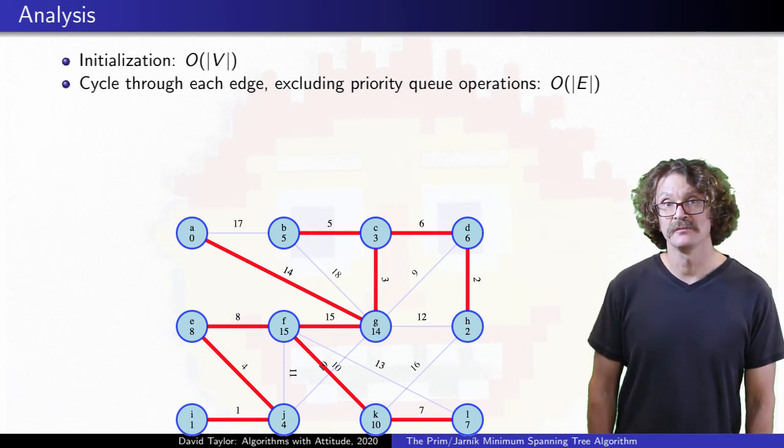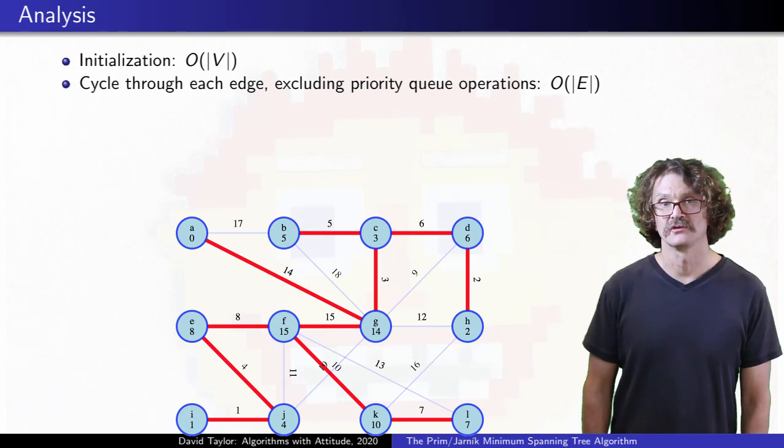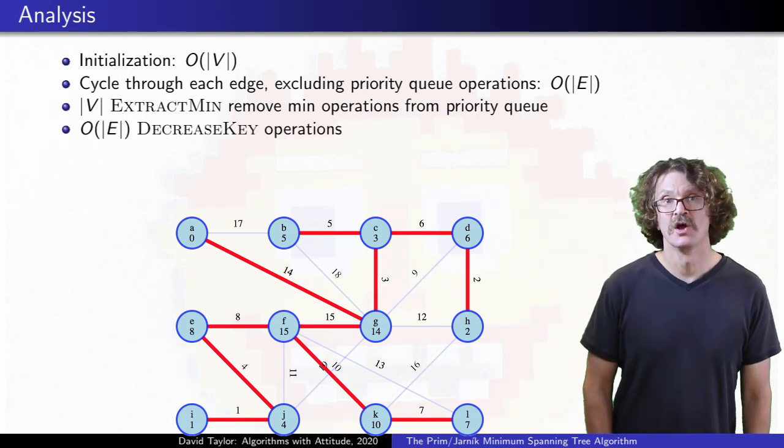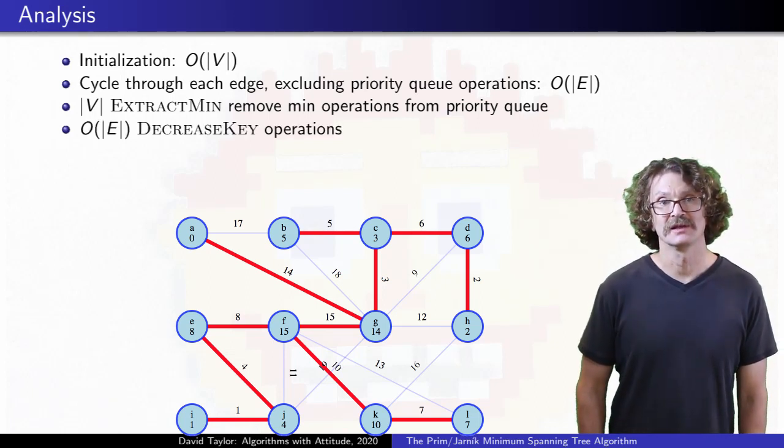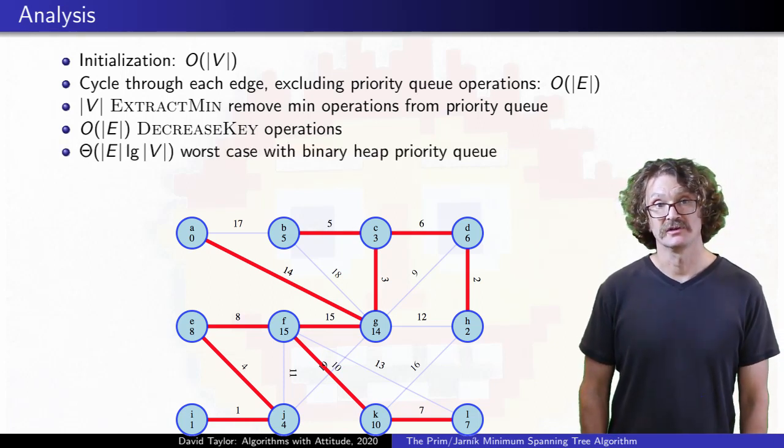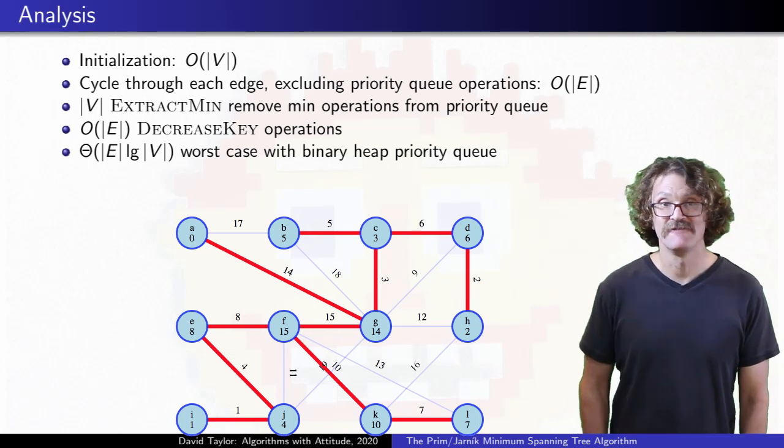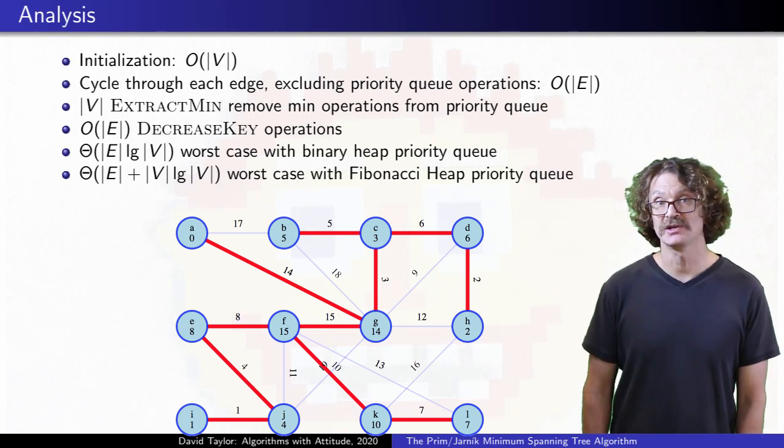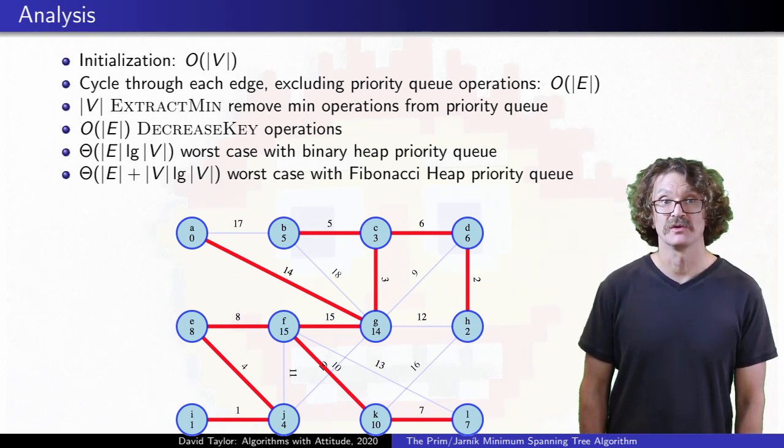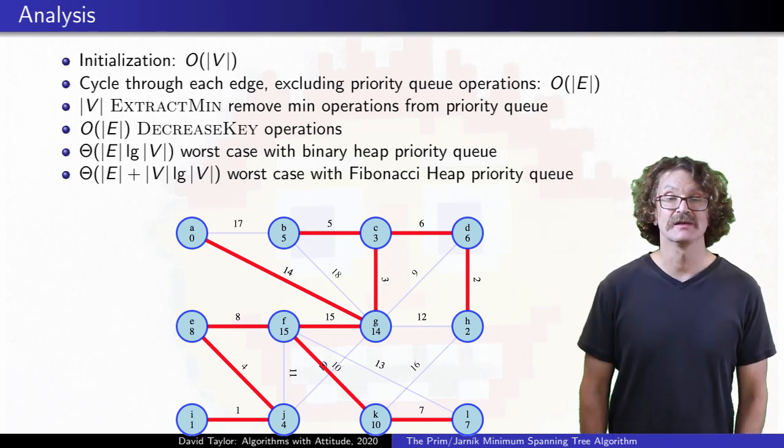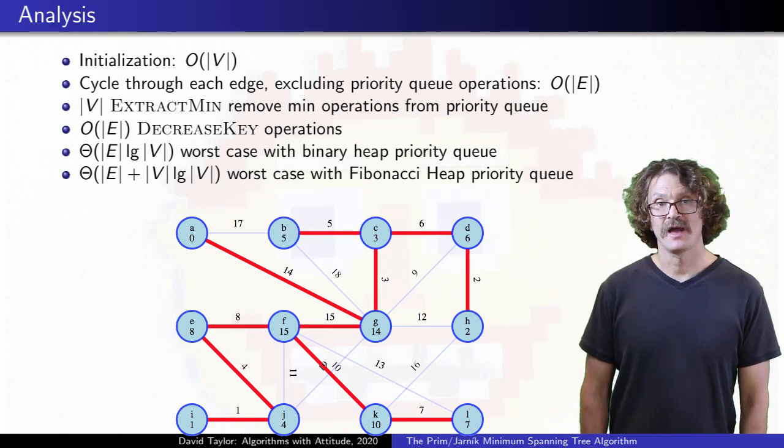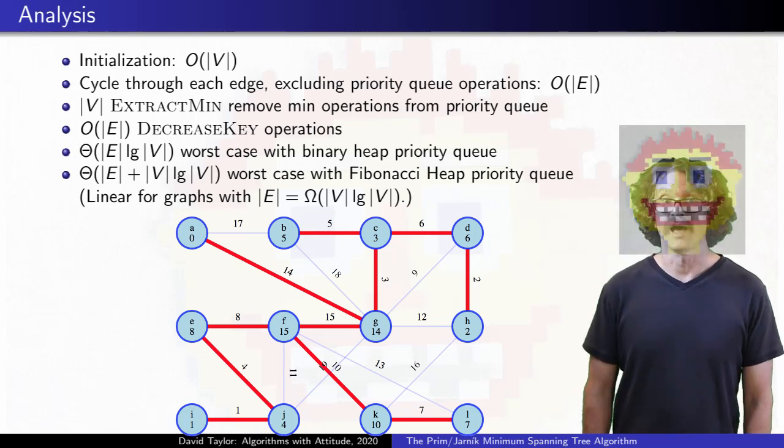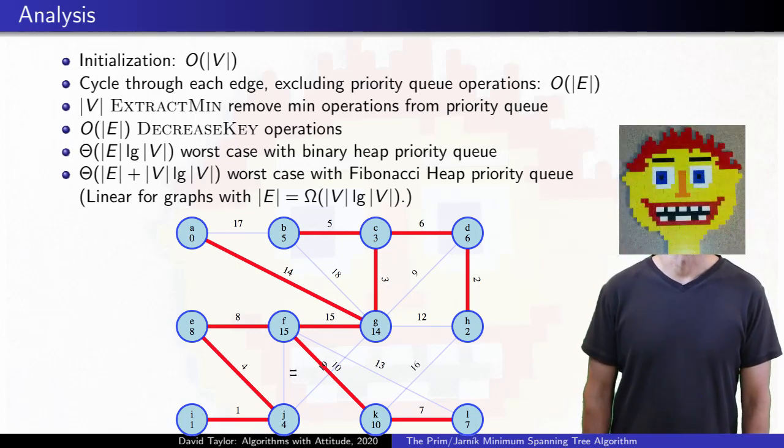The algorithm takes linear time, excluding the priority queue operations. V extractions empty the queue, and up to once for each edge, we might decrease the key of something in the queue. If you use a binary heap as a queue, that will give you E log V time, and if you use a Fibonacci heap, which takes constant average time to decrease a key, and average logarithmic time to extract the minimum, it takes E plus V log V time. If the graph has at least V log V edges, that's linear run time. Not even that queue can fight off the Borg. Resistance is futile.